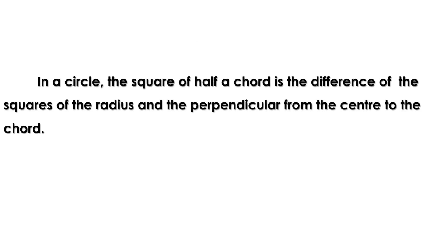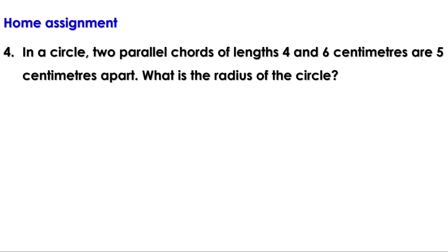Today we discussed the section length of chords and learned that in a circle the square of half a chord equals the difference of the squares of the radius and the perpendicular from the center to the chord. Homework: In a circle, two parallel chords of lengths 4 and 6 centimeters are 5 centimeters apart. What is the radius of the circle? We will discuss the remaining part in the next video. Till then, bye.